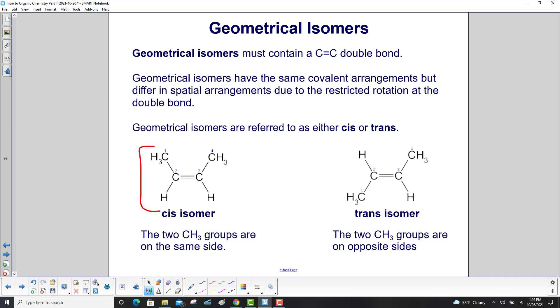For cis, the two CH3 groups are on the same side. For trans, the two CH3 groups are on opposite sides.